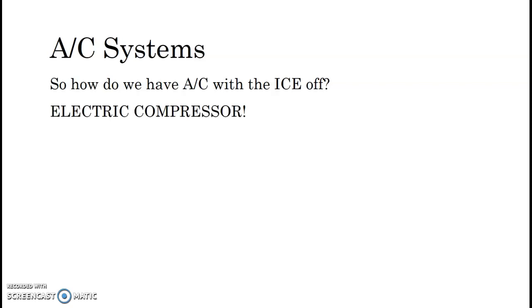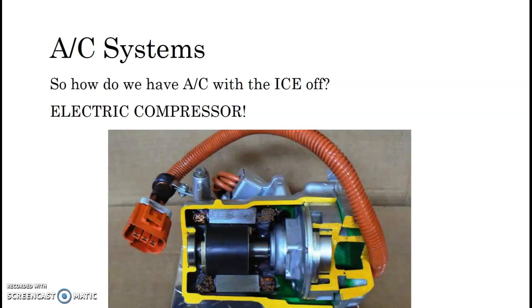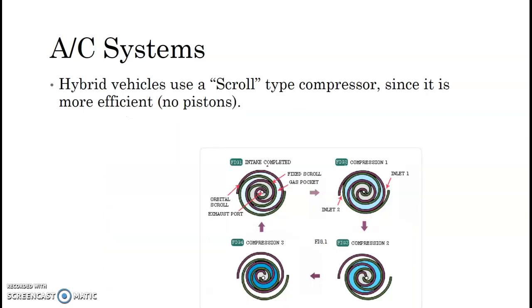So how do we have AC with the ice off on newer vehicles? Basically, the answer is electric compressor. We have this onboard high-voltage battery. Why not use it to operate the AC compressor? So that's what they did. And what you see here, instead of being belt-driven, you have this cutaway, the stator, this AC stator. It works much like MG1, MG2 with a permanent magnet rotor inside here. And it's going to turn the shaft of that AC compressor via high-voltage. And there's a couple different designs, which we'll talk about in a minute. But basically, they all utilize a scroll-type compressor. It's more efficient. There's no pistons.